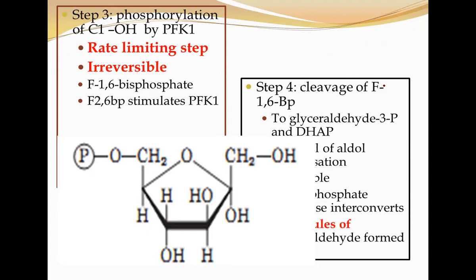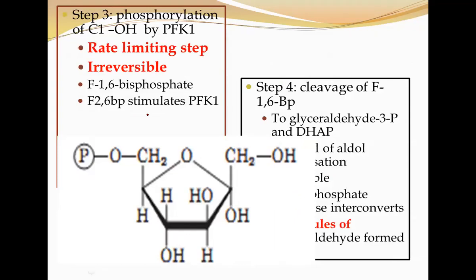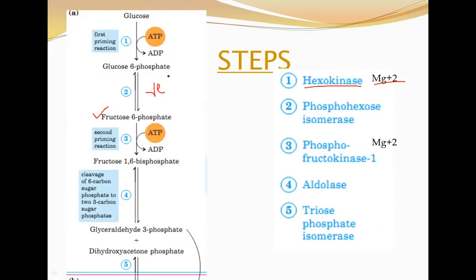What happens next? You have already formed glucose-6-phosphate, so now it has to isomerize to fructose-6-phosphate. You can see that here there are two arrows written, meaning it is a reversible reaction. Glucose-6-phosphate will isomerize to fructose-6-phosphate. The enzyme is phosphohexose isomerase. Most importantly, you have to remember the word 'isomerase' because glucose and fructose are functional isomers. Since a phosphate group is involved, and both glucose and fructose are hexoses, it is called phosphohexose isomerase.